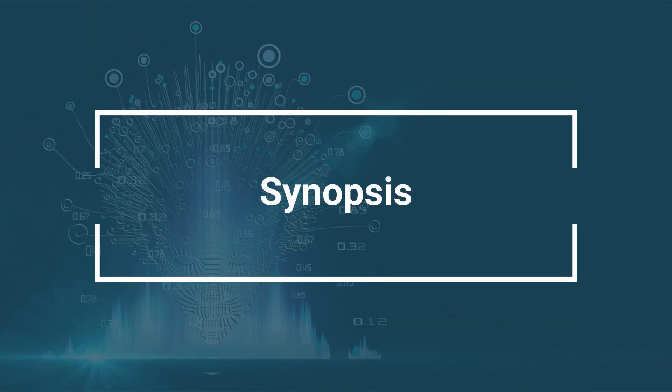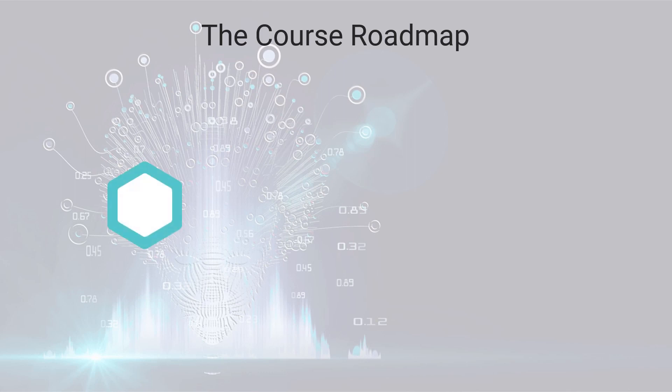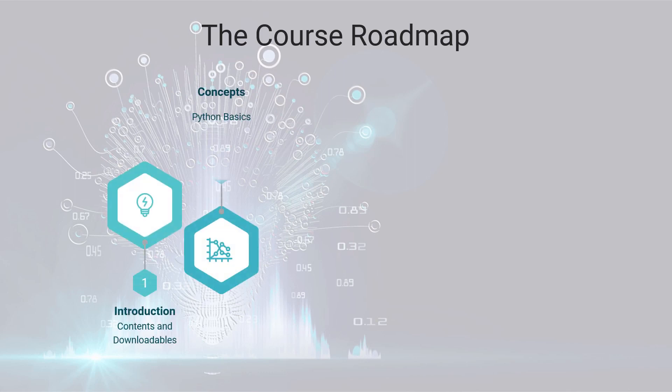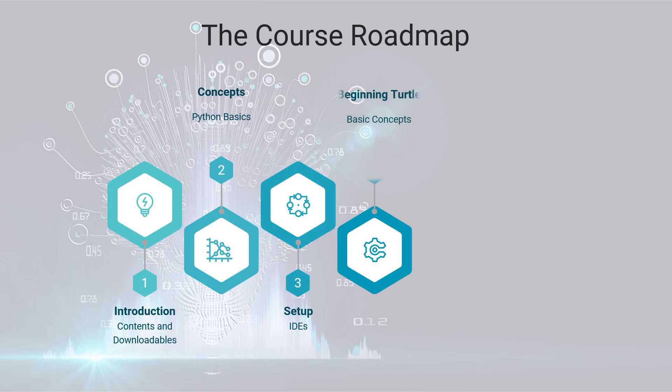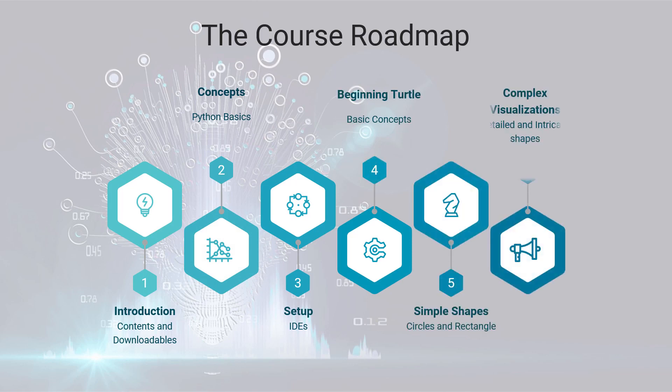Let us go ahead with the synopsis of this course. The course is divided into three sections and these are the six topics that give us an idea about the roadmap of this course. The first part is the introduction where I am going to explain the contents of the course and the downloadables. This introduction is covered by this video lecture and the rest five topics are covered by the rest of the videos in the course.